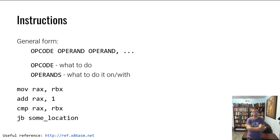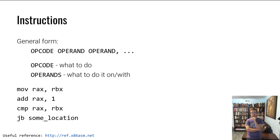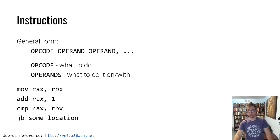Let's talk about instructions. Instructions tell the CPU what to do. They generally take several different forms — we'll cover individual instruction types shortly. They have an operator and several operands. A useful reference is an online x86 assembly listing where you can see the instructions and their actual binary and hexadecimal values.